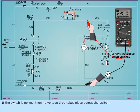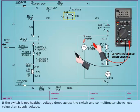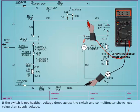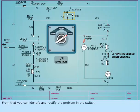If the switch is normal, then no voltage drop takes place across the switch. Hence the multimeter shows full supply value. If the switch is not healthy, voltage drops across the switch and the multimeter shows less value than supply voltage. From that you can identify and rectify the problem in the switch.